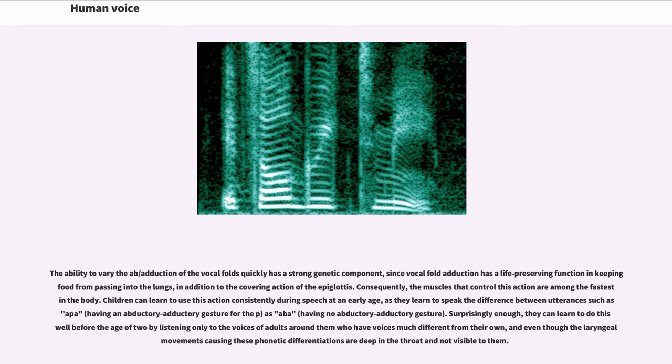Consequently, the muscles that control this action are among the fastest in the body. Children can learn to use this action consistently during speech at an early age, as they learn to speak the difference between utterances such as apa vs abba. Surprisingly enough, they can learn to do this well before the age of two by listening only to the voices of adults around them who have voices much different from their own, and even though the laryngeal movements causing these phonetic differentiations are deep in the throat and not visible to them.